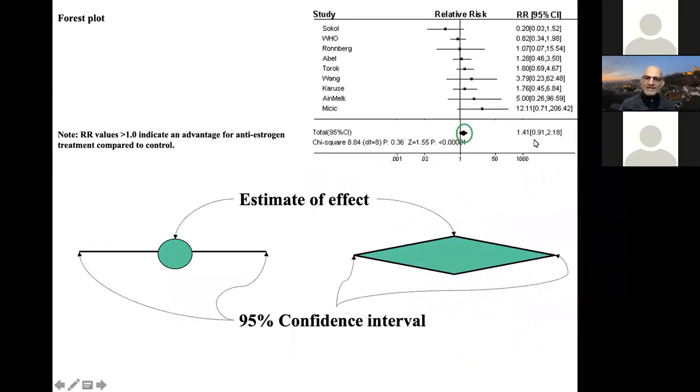So basically at the bottom of these individual results, you get what is described as a diamond. And in this diamond, the middle point, the thickest point, is the point estimate of the summary effect. And the length of the diamond from one side to the other is the confidence interval of the summary effect.